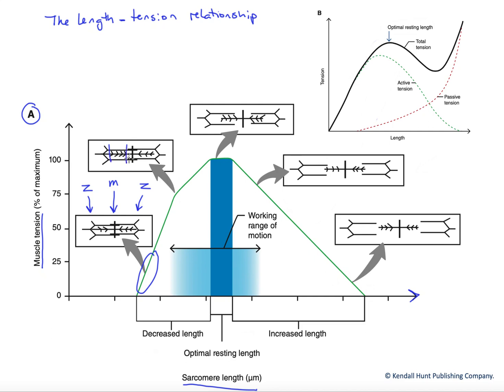Remember the zone of overlap is that key region where cross bridges can form. And so our zone of overlap has gotten better. We get more cross bridges here at increased resting length. Once we stimulate, we'll get a stronger contraction.